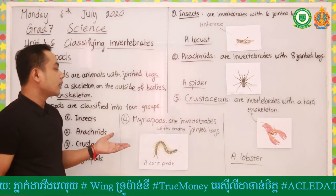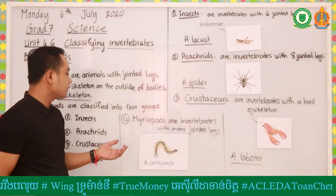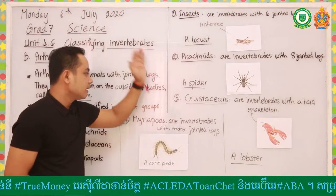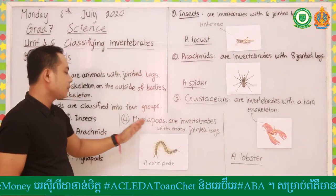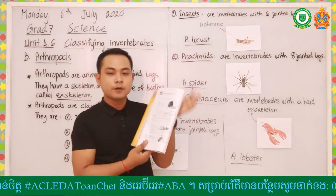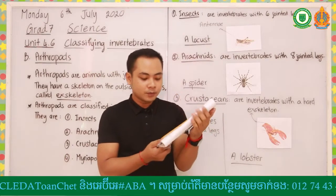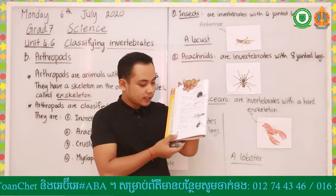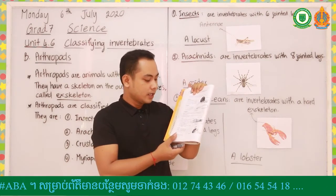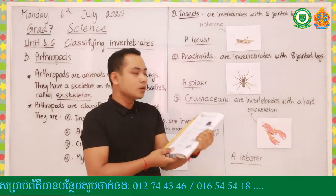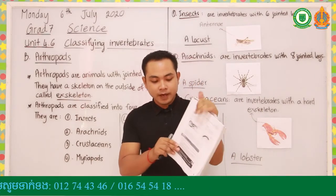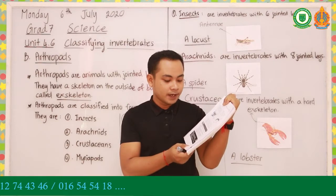These are the four classes or four groups of arthropods: insects, arachnids, crustaceans, and myriapods. To get more information about these four groups, you can read the passage on page 64. After watching the video, you can read more on pages 64 and 65.